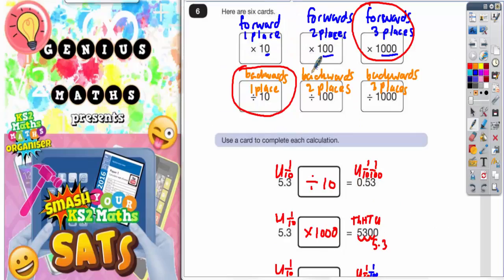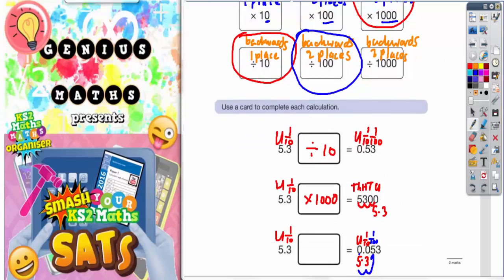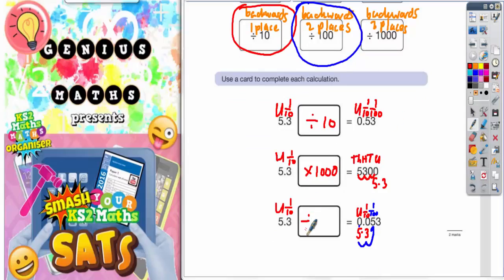Two places backwards is this one here, divided by one hundred. So your final answer is divided by one hundred.